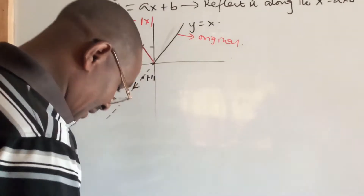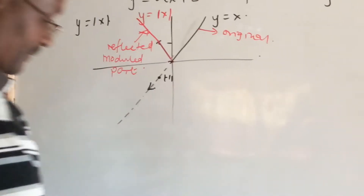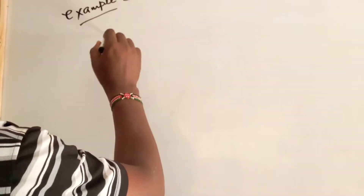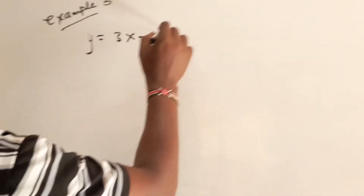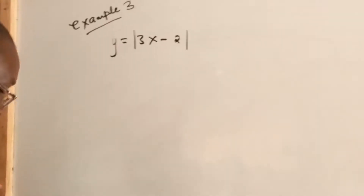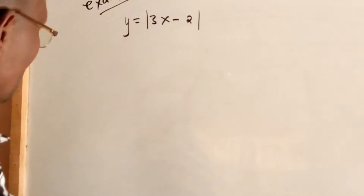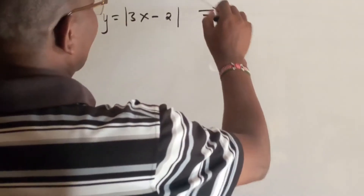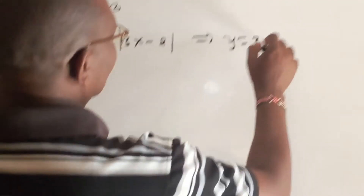We are going to see this in Example 3. Let's look at Example 3, having understood that piece of information. Example 3 says: sketch the graph of y is equal to modulus of 3x minus 2.